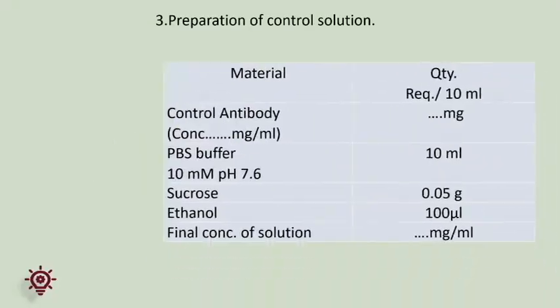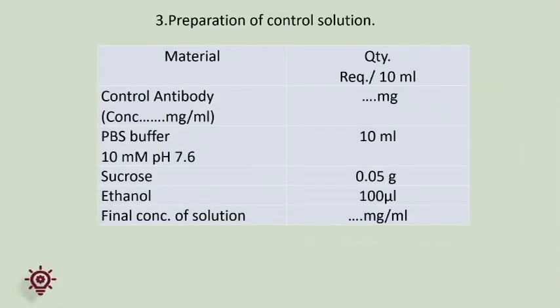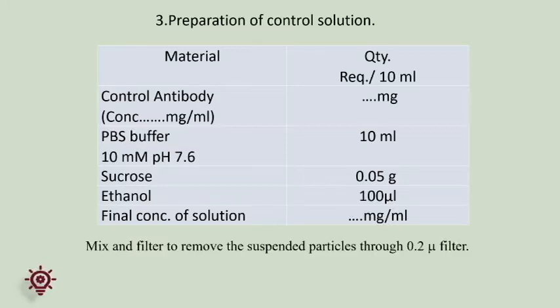Preparation of control solution: calculate and dilute the required quantity of stock antibody with PBS buffer and other components to obtain the final concentration of specific milligrams per mL in the required quantity of control solution. Mix and filter to remove suspended particles through a 0.2 micron filter.